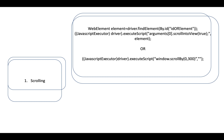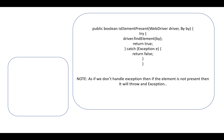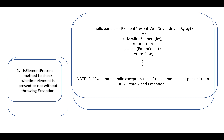How to perform scrolling: use JavascriptExecutor. Multiple ways — one is to get the element and use executor.executeScript() with scrollIntoView(true) to scroll the element into view. Another way is to scroll by specifying dimensions, like window.scrollBy(0, 300).